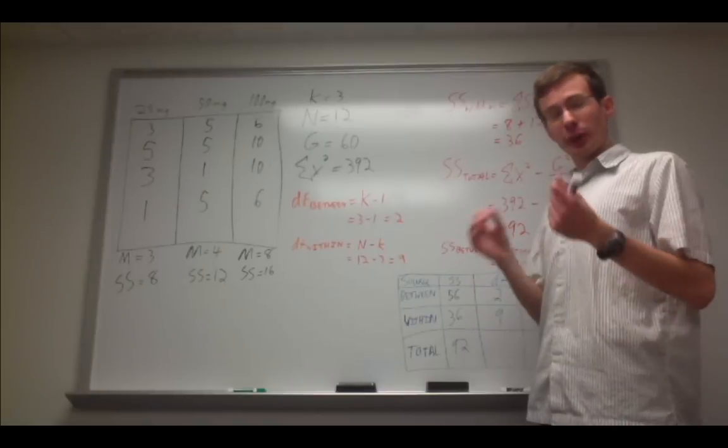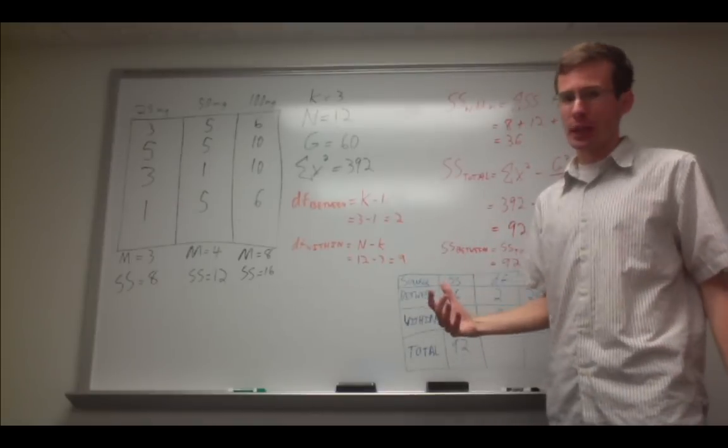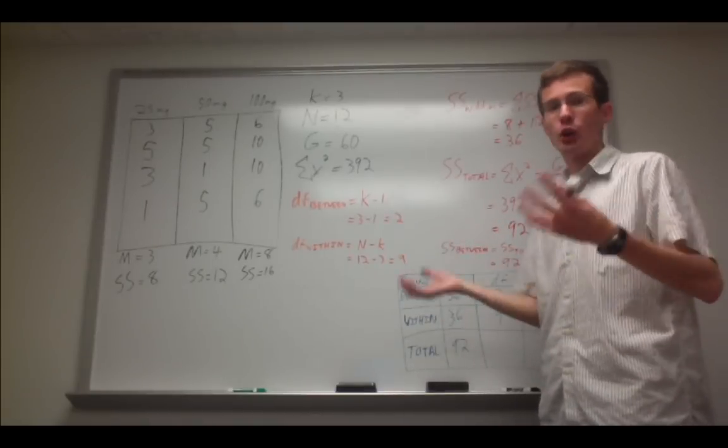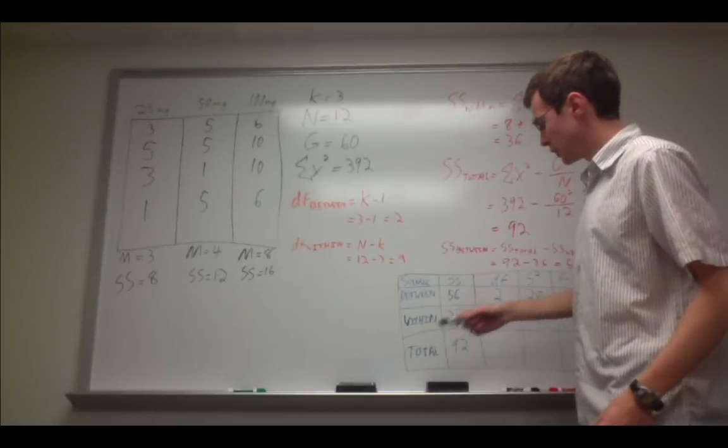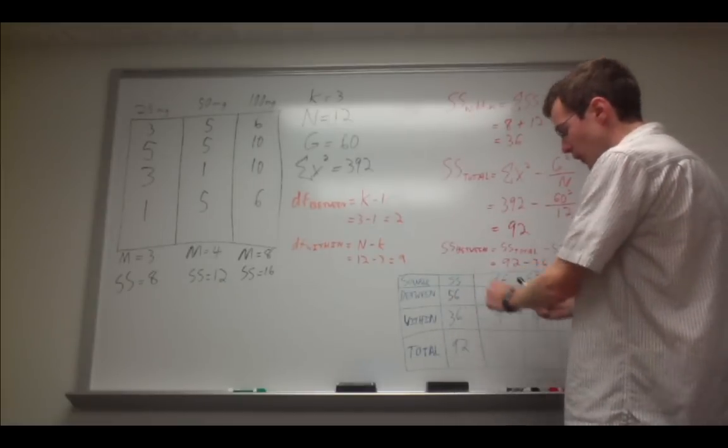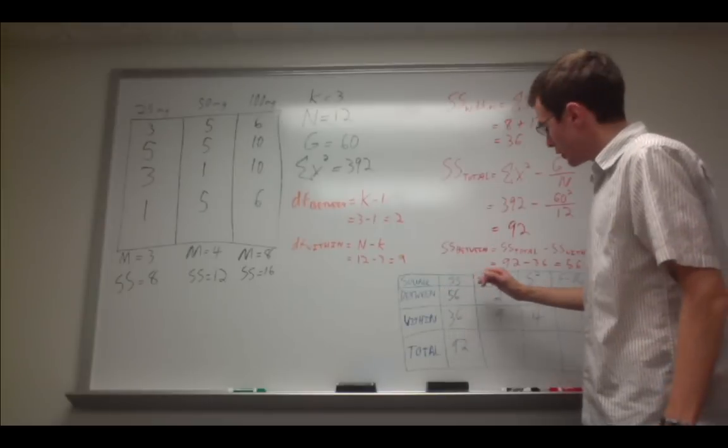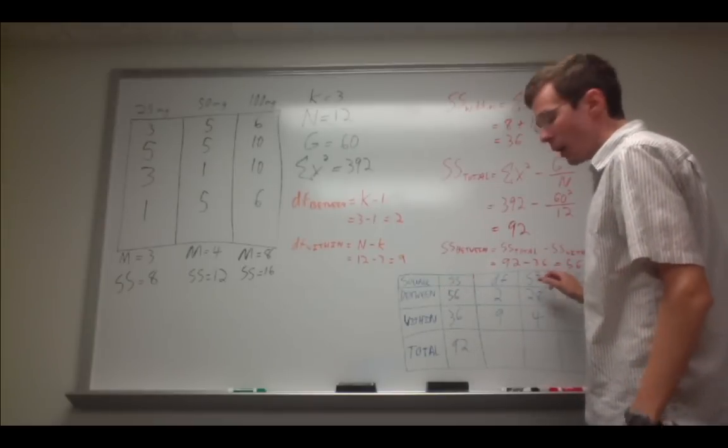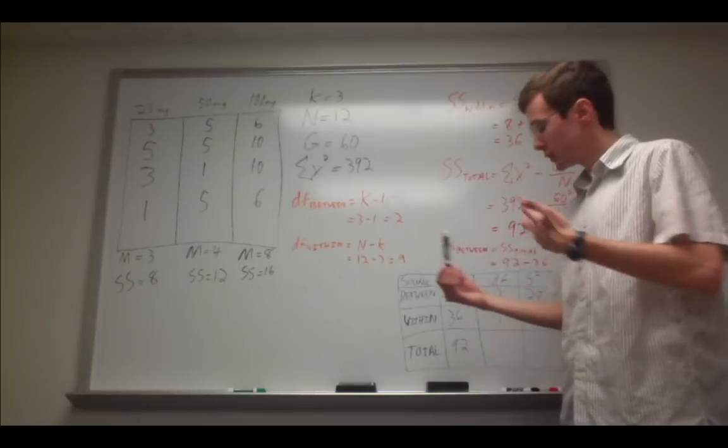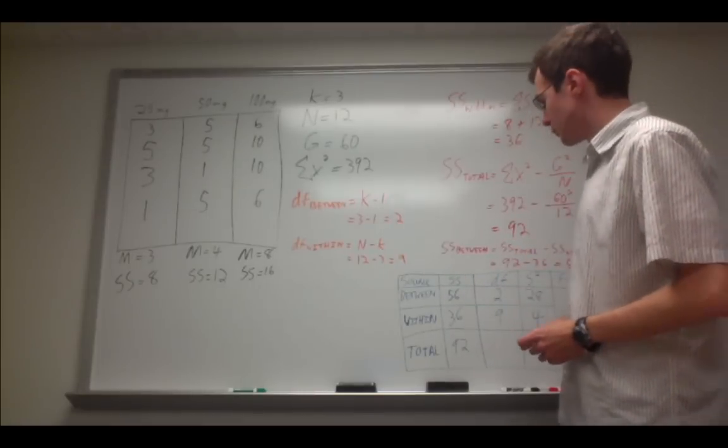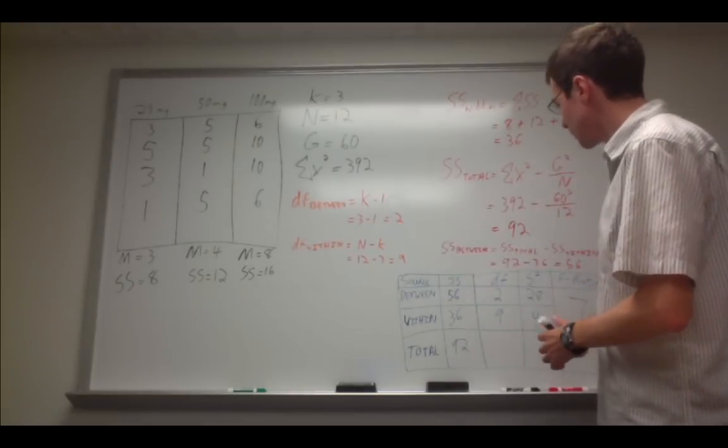Once you have all of that, it's very useful to construct what's called a source table. You can use this in any ANOVA calculation. We have the between, within, and the total. In each of the columns, we have sums of squares, degrees of freedom, and our calculated variance. This is a weighted variance divided by the degrees of freedom. So we just plug in all of these.